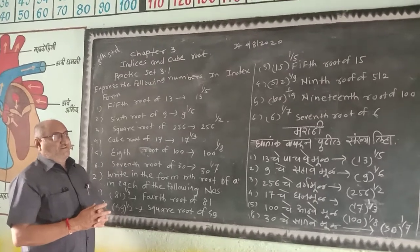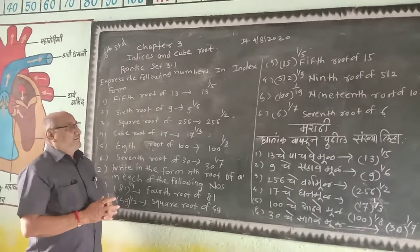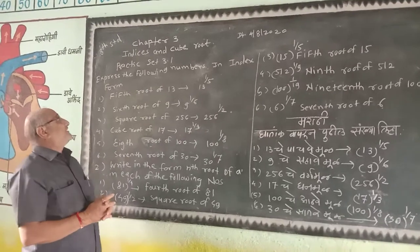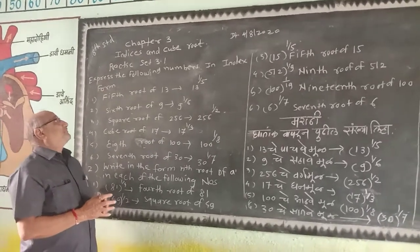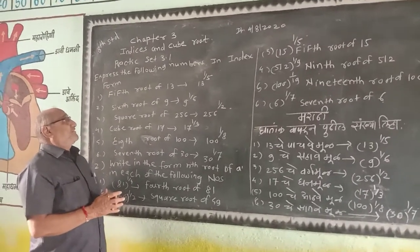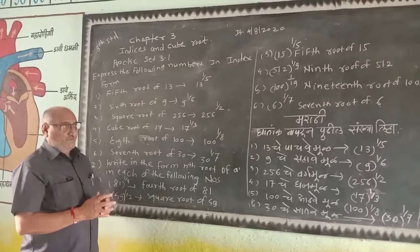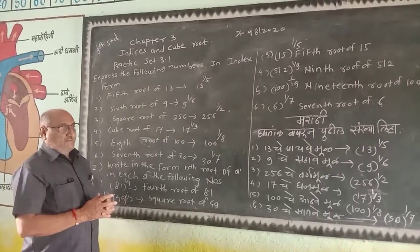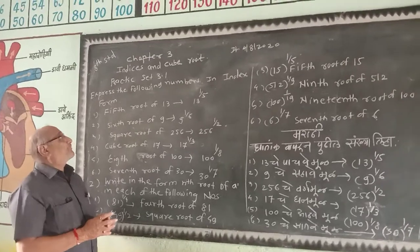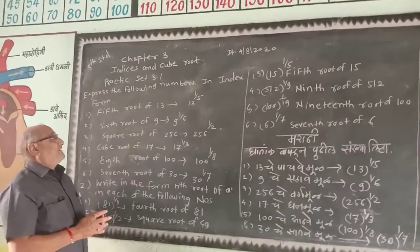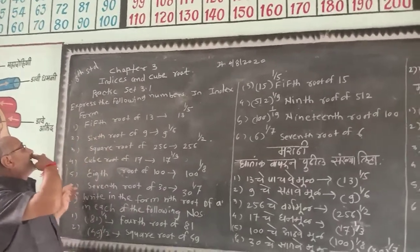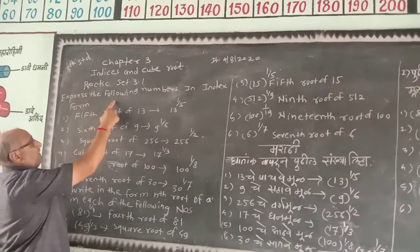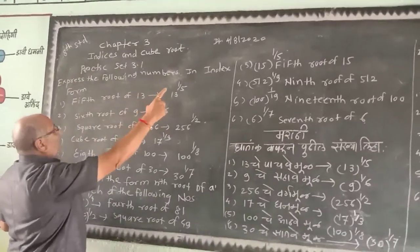I start the Channel 8, Mathematics Subject, Chapter Number 3: Indices and Two Roots, Gata Anga and Gata Anga Two Roots. Practice 3.1. Explain the following numbers in index form.